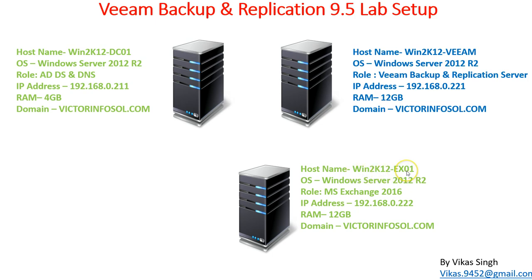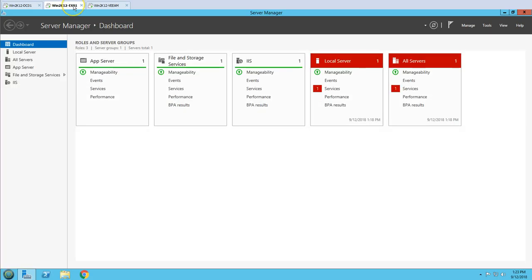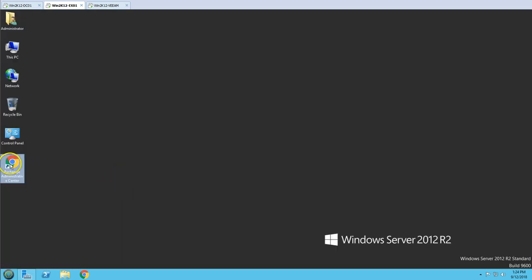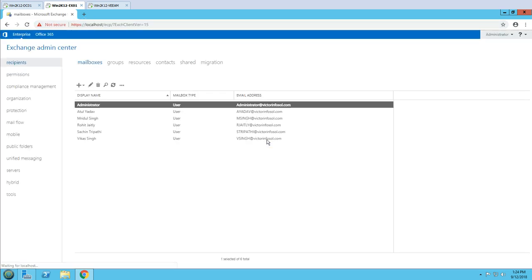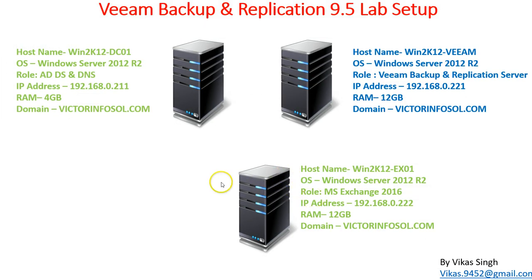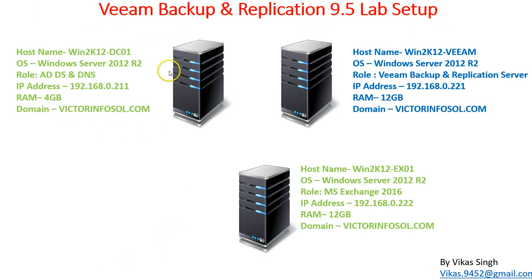The third machine is an Exchange server — win2k12ex01 — which is a Microsoft Exchange 2016 server. You can see the ECP console and a few user accounts here. So we have this infrastructure in our lab environment. I'm going to install Veeam Agent on my domain controller and Exchange server, which we will use in the next video to back up these machines and perform physical-to-virtual migration using the Veeam backup agent.